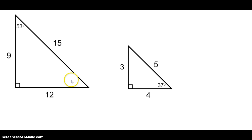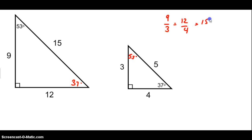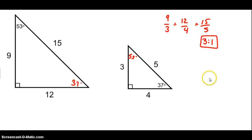By using the triangle sum theorem, we can see that our missing angle here is going to be 37 degrees, and our missing angle here is 53 degrees. So we can see that these triangles are similar by angle-angle similarity. We can also look at the side lengths — matching up corresponding sides gives us 9 to 3, 12 to 4, and 15 to 5. If we reduce each of those ratios, the common ratio — the scale factor — is 3 to 1. So we can say that these triangles are similar to each other.